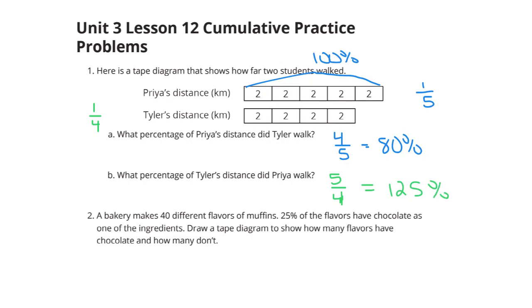Question two, a bakery makes 40 different flavors of muffins. 25% of the flavors have chocolate as one of the ingredients. Draw a tape diagram to show how many flavors have chocolate and how many don't. Well, you have an example of a tape diagram above. 25% means we can break this diagram into fourths.